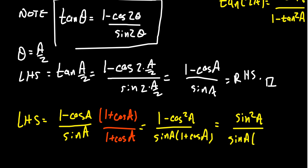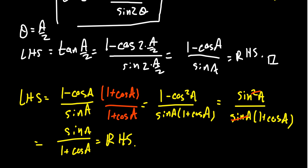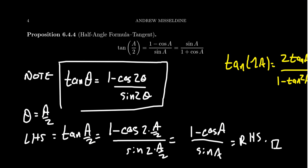So you get sine squared on top and sine of a on the bottom, along with one plus cosine of a. One sine of a on the bottom cancels with one of the sine a's on top, leaving sine of a over one plus cosine of a — which is exactly the right-hand side. We've now established that trigonometric identity. So tangent of a over two equals one minus cosine of a over sine of a, or sine of a over one plus cosine of a. Use whichever form is most convenient; if you see no difference, just use the first form.